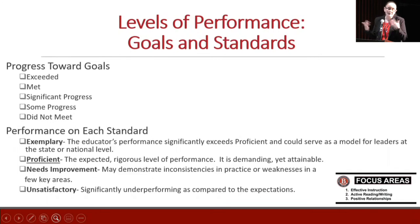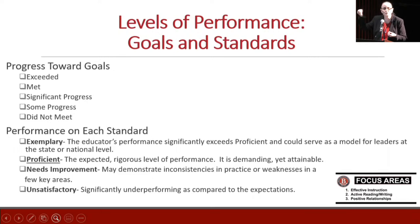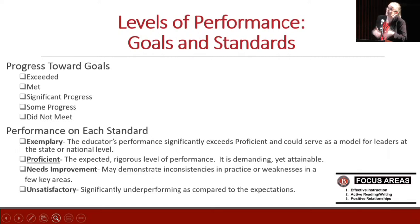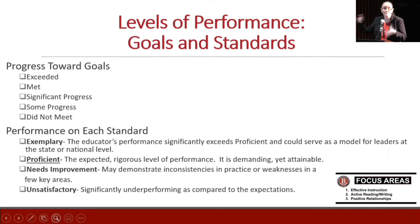Exemplary, in the state's language, describes practice so good that it would serve as a model at the state or even national level - someone who might facilitate professional development or lead institutes for other educators. 'Needs improvement' - I wish we could call it 'not there yet' - is actually the language in the regulation, and it describes practice that's not quite reflective of proficient practice as described in the rubric. Unsatisfactory is significant underperformance in terms of the standards.